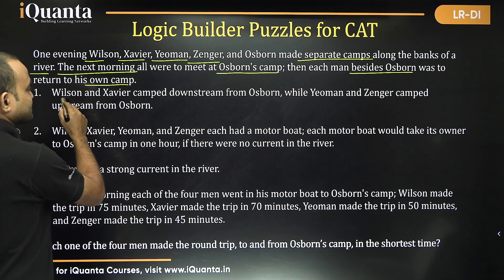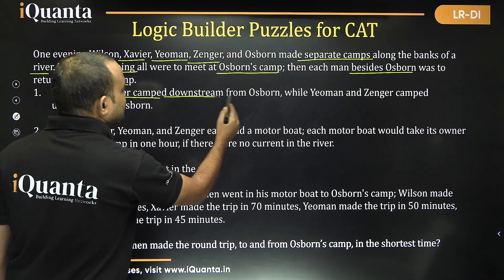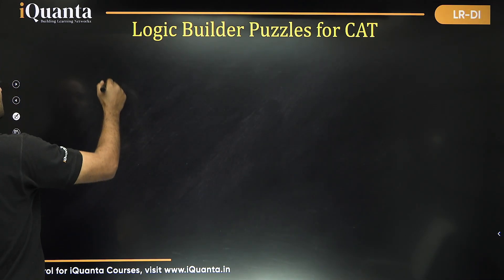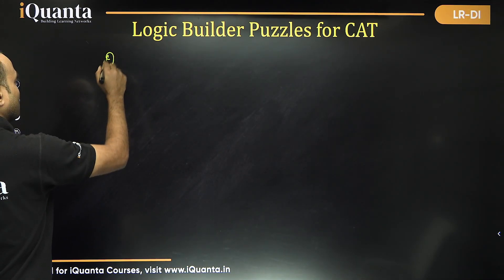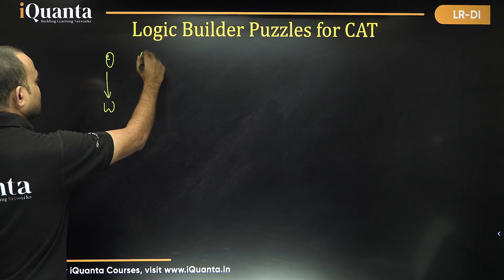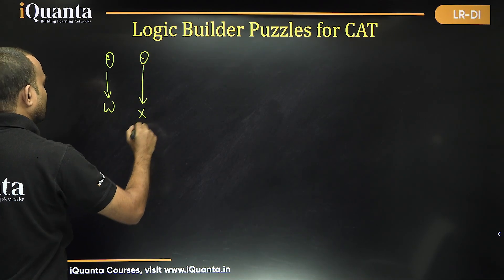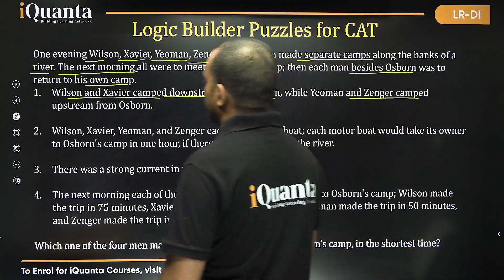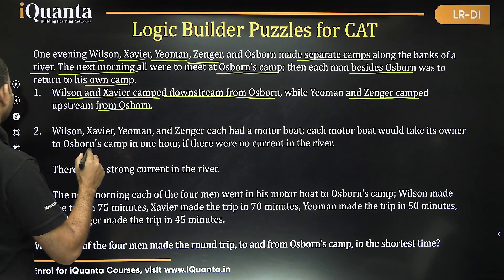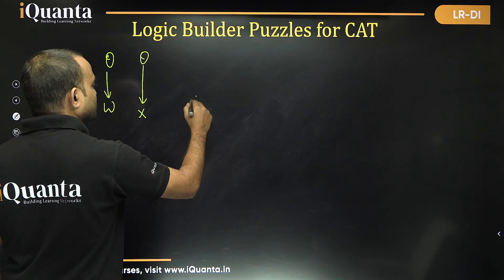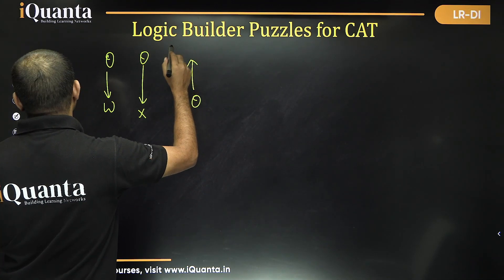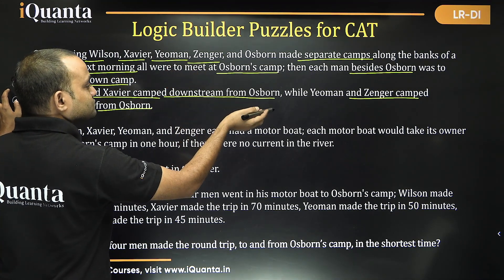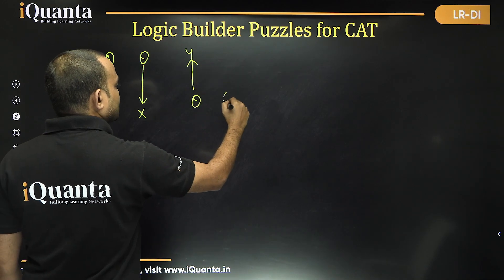Wilson and Xavier camped downstream from Osborne, while Yeoman and Zenger camped upstream from Osborne. So Osborne is in the middle, Wilson and Xavier are downstream, and Zenger and Yeoman are upstream.